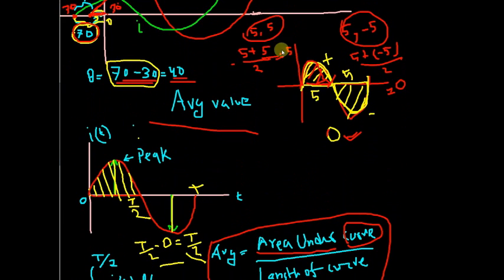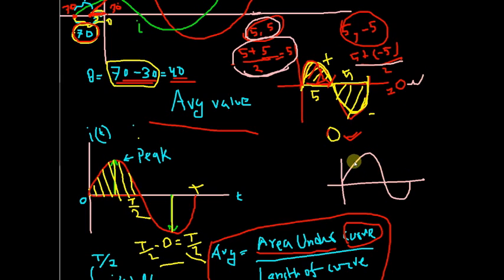Now let's talk about average value. Average is positive 5 plus negative 5 divided by 2. This equals zero. For two cycles, positive 5 plus minus 5 equals zero, so the average is zero. The average of a sine wave over a full cycle is zero, which is useless.